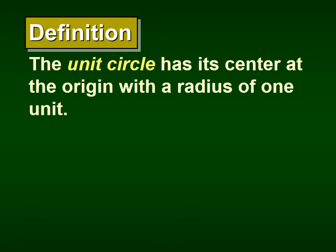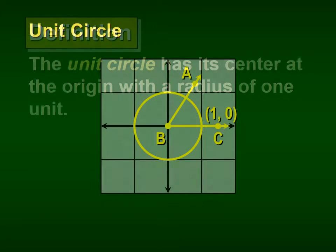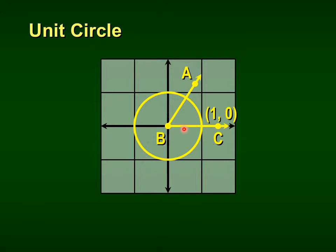Next, let's talk about the unit circle. The unit circle has its center at the origin with a radius of one unit. The radius has length one, and since this is our initial ray the y-value is zero, giving us the ordered pair (1, 0). Going around: (0, 1) at the top, (−1, 0) on the left, and (0, −1) at the bottom.